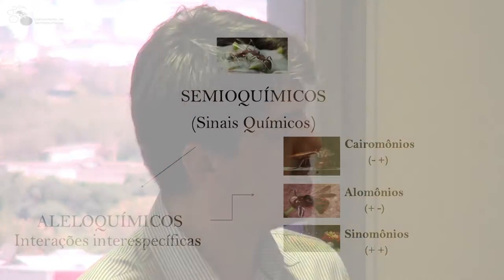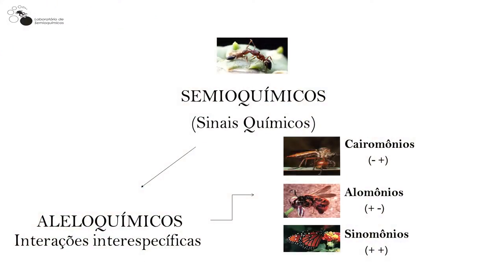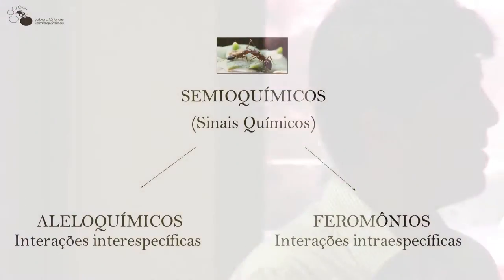Por último, os sinomônios, onde ambas as espécies são favorecidas. O exemplo clássico é a interação de borboletas com a planta polinizadora: o inseto se beneficia do pólen da planta, enquanto a planta se beneficia pelo processo de polinização. Assim temos as três subclasses de aleloquímicos.